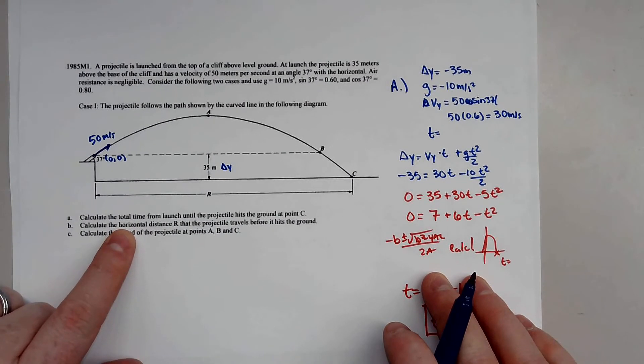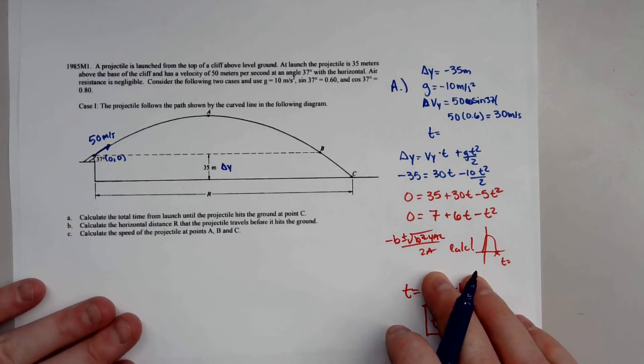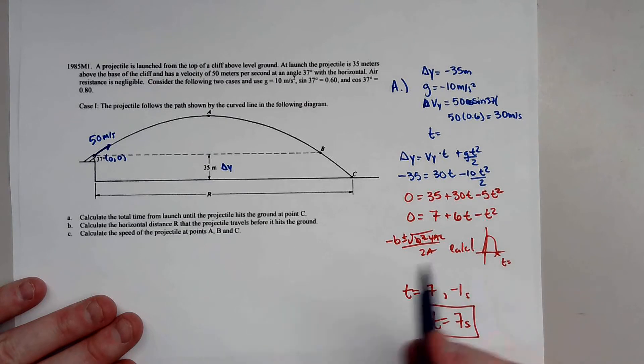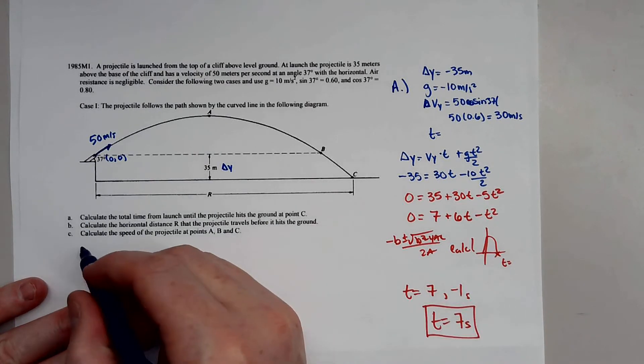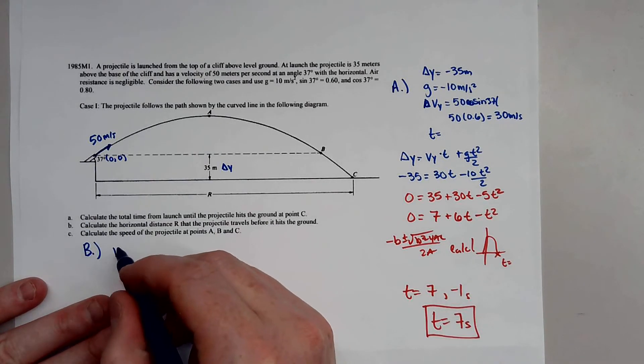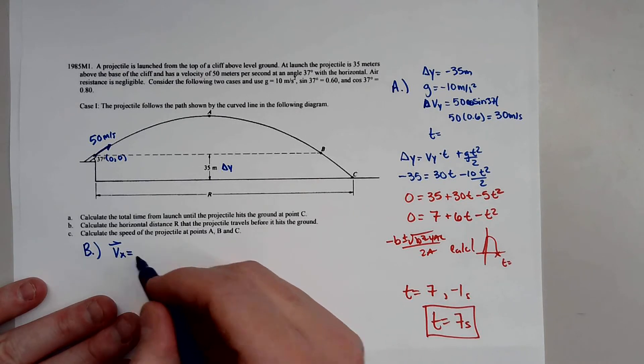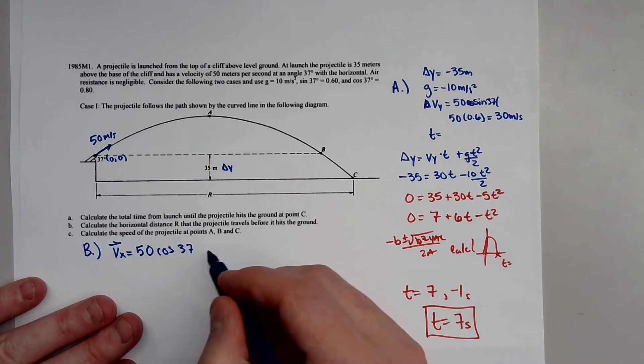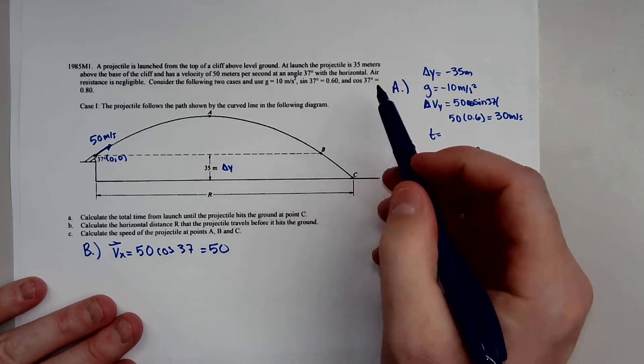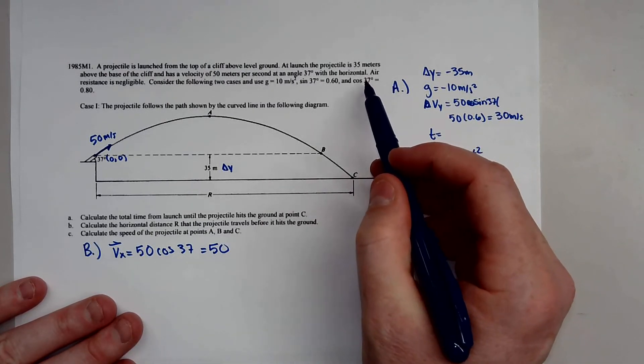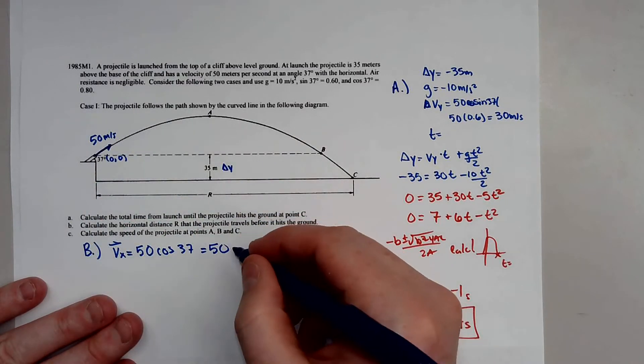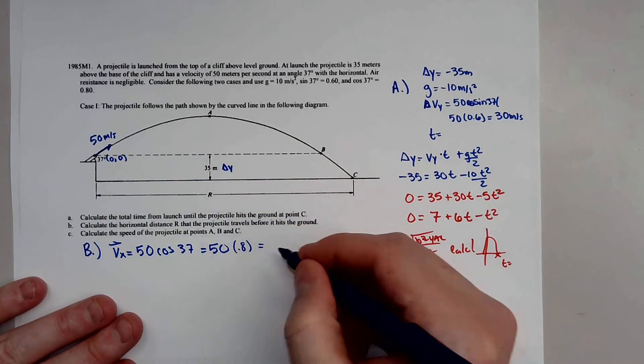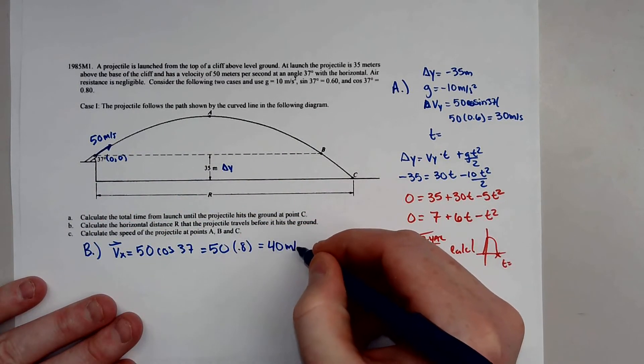B is calculate the horizontal distance, the range, as we like to call it, that it travels before it hits the ground. Well, for B, we know our vertical velocity will equal 50 cosine of 37, and they went ahead and gave that to me right here. Cosine of 37 is 0.8. So that is going to be 40 meters per second.